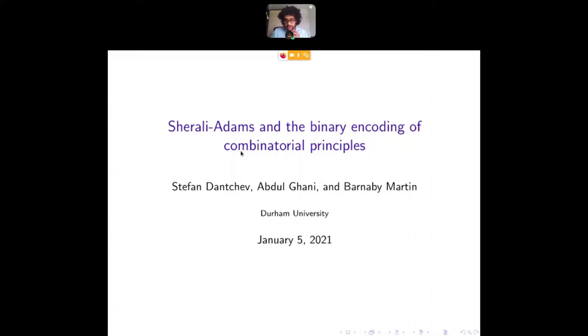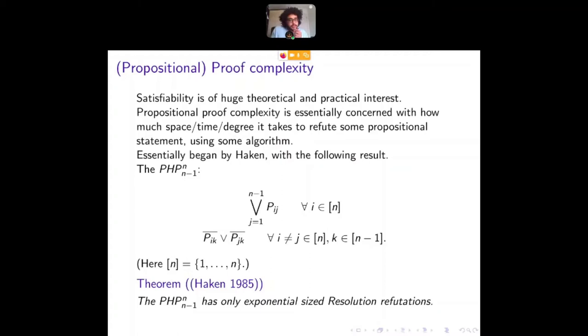So the field that we're situated in right now is propositional proof complexity, and at the heart of this field what we're interested in is the complexity of proof systems, a proof system being an algorithm that proves that a given SAT formula in CNF is unsatisfiable.